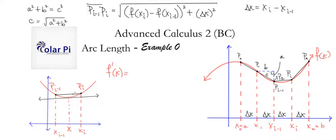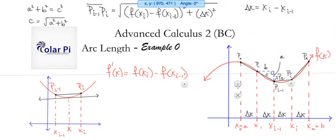And so the mean value theorem said that f prime of x, which is the slope of the tangent line, equaled the slope of that secant line, which is f of x_i minus f of x_{i-1} divided by x_i minus x_{i-1}. And so that's just delta x. So divided by delta x.